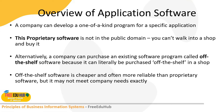A company can develop a one-of-a-kind program for specific applications — this is proprietary software, which is not in the public domain and cannot be purchased in a shop. Proprietary software is designed for a specific application and owned by the company, organization, or person using it. For example, the software on a Samsung Smart TV is meant for that specific screen and will not work on any other device.